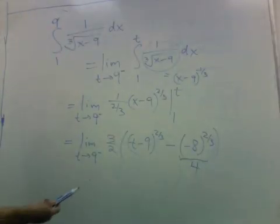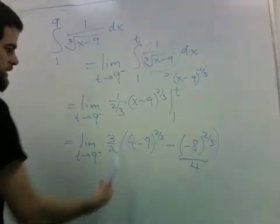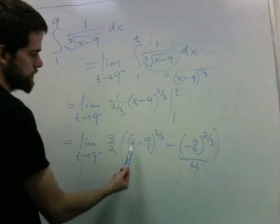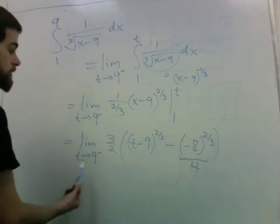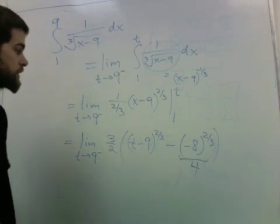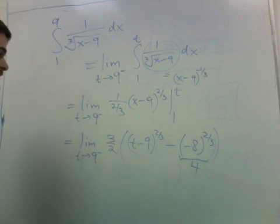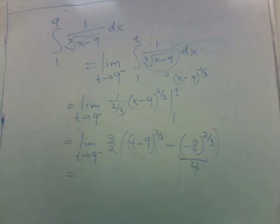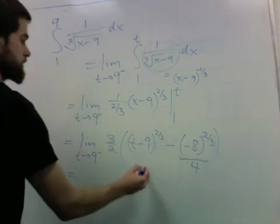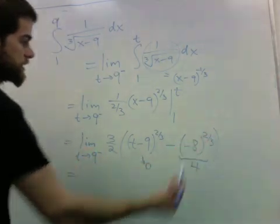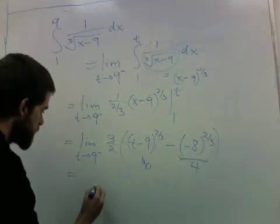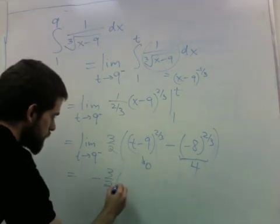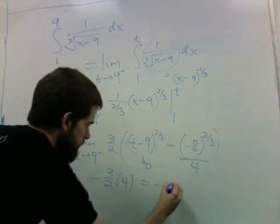So the limit of this, we have to look at this thing. Taking cube roots and squaring negative things is no big deal, it's perfectly fine. When t equals 9, this thing is continuous, so we can just plug in 9. This goes to 0, and this is just a number so it stays where it is, and we get negative 3 halves times 4, which is just negative 6.